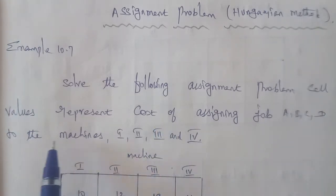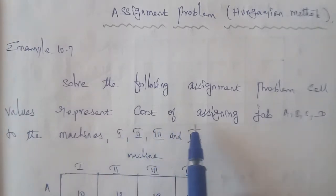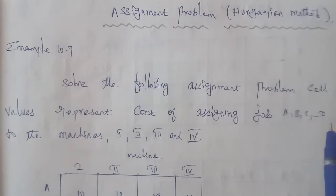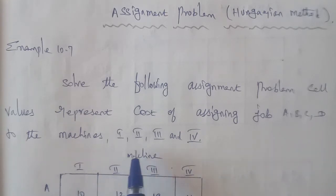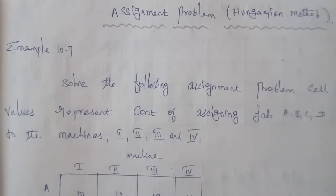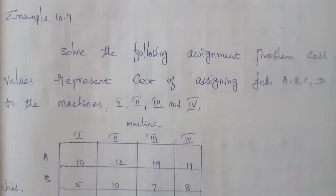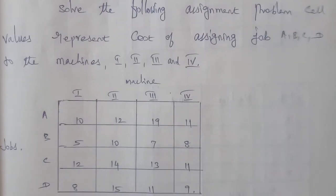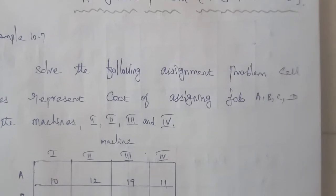Cell values represent the cost of assigning jobs A, B, C, D to the machines 1, 2, 3, 4. So the given data is an assignment problem.